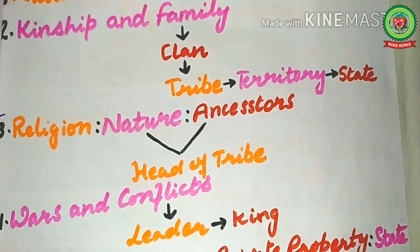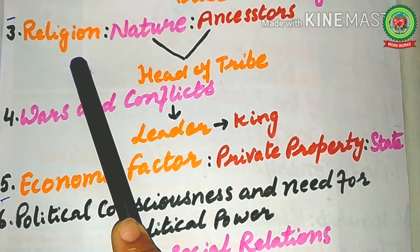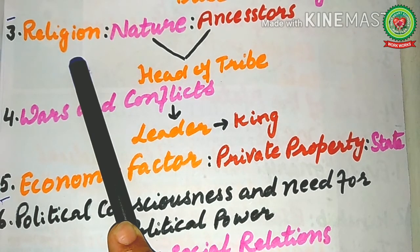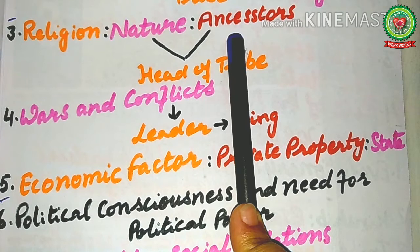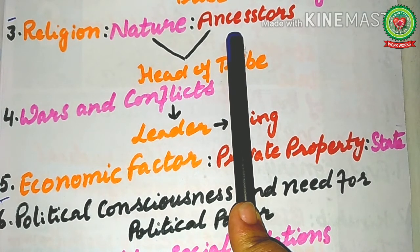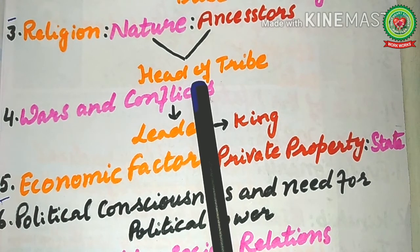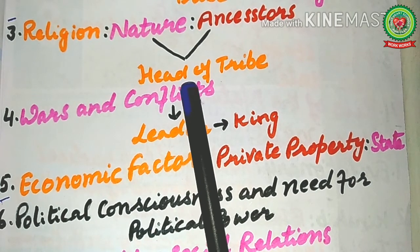The third factor is religion. Along with kinship, religion also acted as a factor in the birth of the state. Common religion came to be a symbol of common kinship. It started with the worship of nature and the worship of ancestors. Later, religion became a family feature to lessen the fear of evil spirits, and the head of the tribe used it to secure his authority and orders. So religion also helped in the formation of the state.